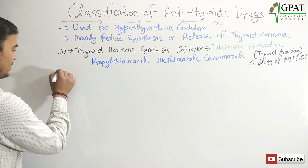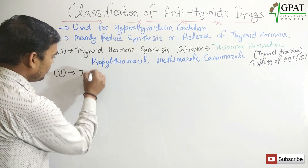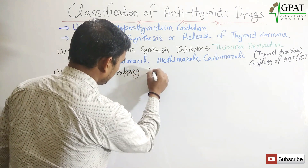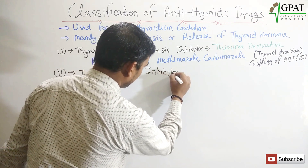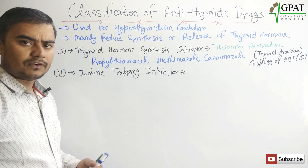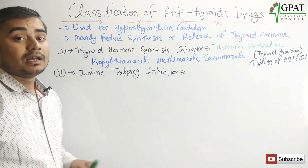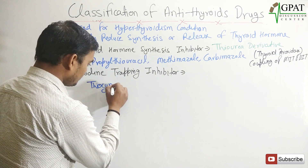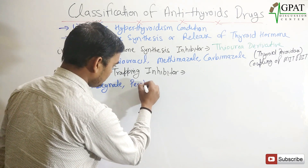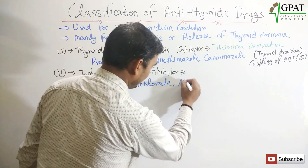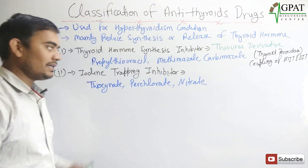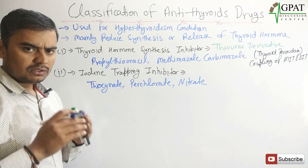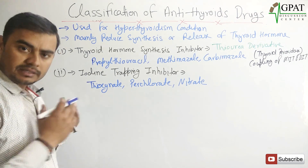The next class is iodine trapping inhibitors. Iodine mainly comes in ionic form, and some ions inhibit iodine trapping. These are thiocyanate, perchlorate, and nitrate. One important point: these ions are toxic in nature, so they are used very rarely.